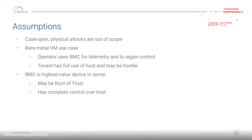I'm going to make a few assumptions about a threat model for BMCs. First, if you have to open the case of the server, that's out of scope — that's physical attack. I'm going to explicitly include the bare metal VM use case. I'm going to assume that the BMC is primarily used for control of the system and that the host is potentially hostile and should be treated as such. I'm also going to assume the BMC is the highest-value device in the server from an attack perspective — it's the most privileged thing in the system. If I can get control of the BMC, I'm very likely to get control over the host and may be able to entirely subvert the root of trust.